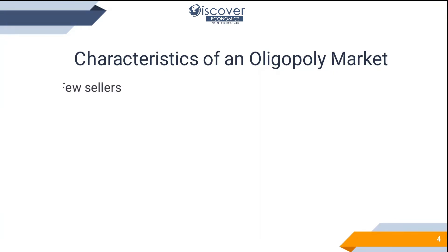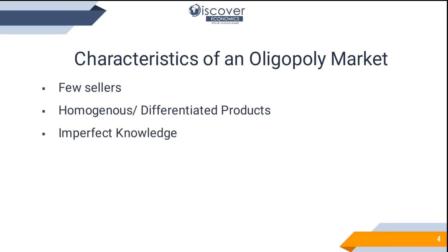The characteristics of the oligopoly market are: very few sellers in the market, homogeneous or differentiated products, imperfect knowledge among companies, and high barriers to entry — not every person can be a supplier. For example, oil-exporting countries have oil as their natural resource source.